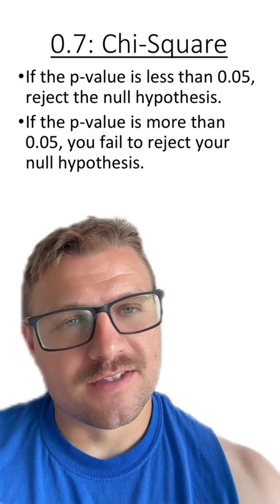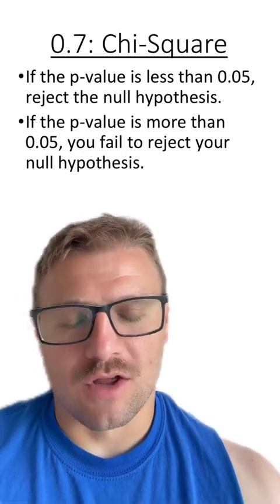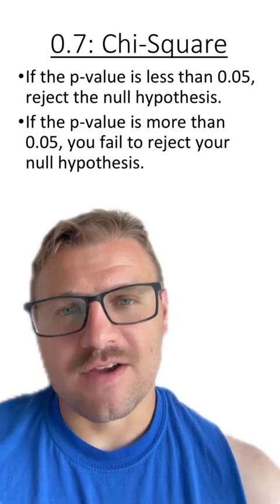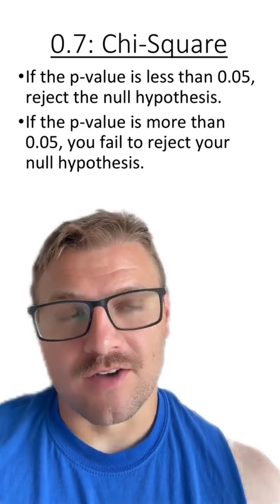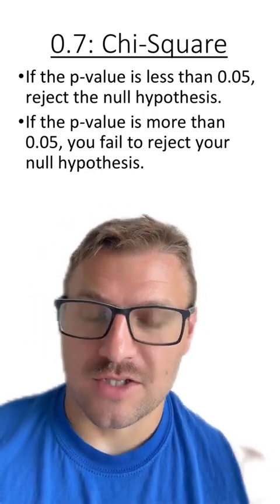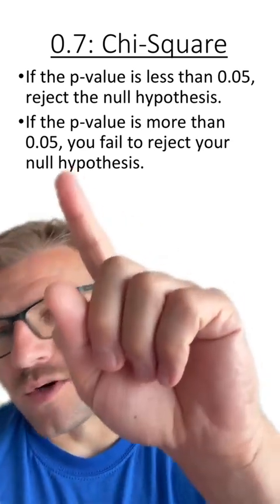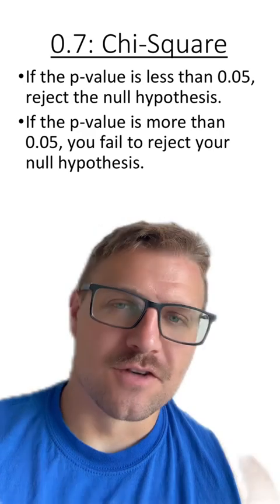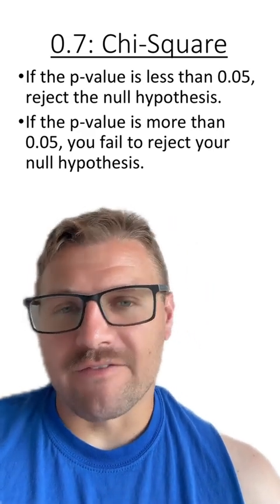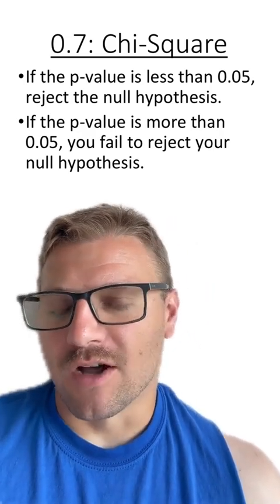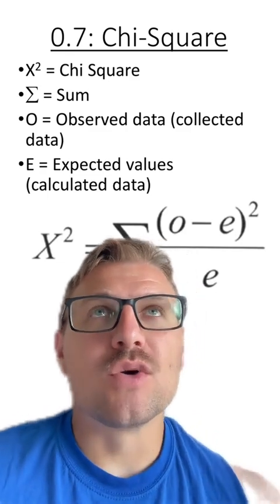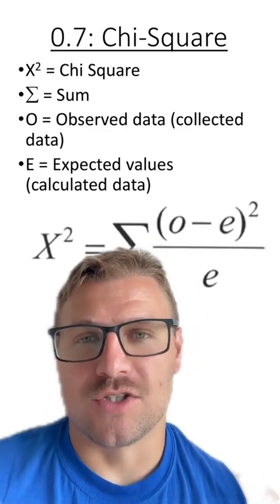Something to remember when calculating this p-value is if the p-value is less than 0.05, we reject the null hypothesis. And if the p-value is more than 0.05, you fail to reject your null hypothesis. You might be wondering why we're using this 0.05 number. That comes from having that 95% confidence interval.